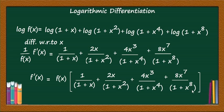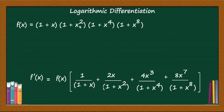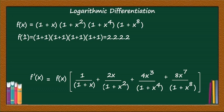The first part of the problem is complete. Now to find f'(1): first find f(1). f(x) = (1+x)(1+x²)(1+x⁴)(1+x⁸), so f(1) = (1+1)(1+1)(1+1)(1+1) = 2·2·2·2 = 2⁴ = 16.